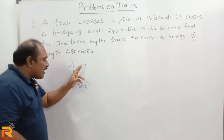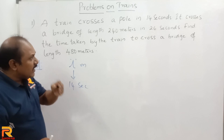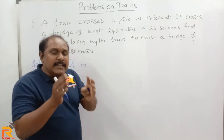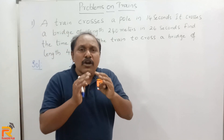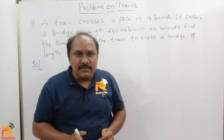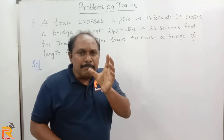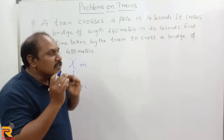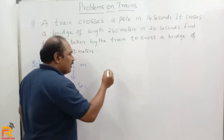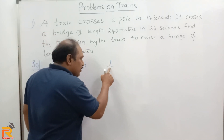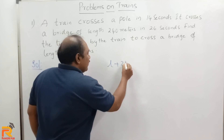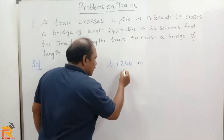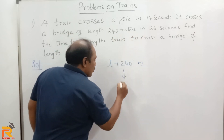Next, it crosses a bridge of length 240 meters. What is the distance the train has to travel to cross a bridge of length 240 meters? To cross a bridge, the train has to travel a distance equal to the length of the train plus the length of the bridge. So to travel a distance equal to L plus 240 meters, the train takes 26 seconds.